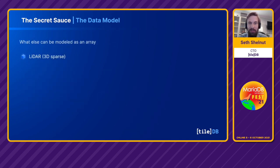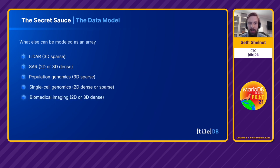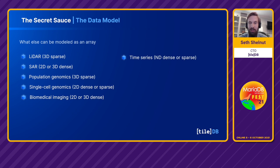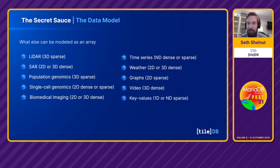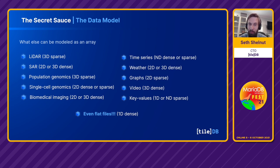What else can be modeled as arrays besides tables? We can have 3D LiDAR point cloud data, imaging data like SAR, genomics data like VCF and BAM files, 3D sparse arrays, single cell genomics, biomedical imaging, time series data, weather data, graphs, videos, key-value stores using strings as dimensions, and even flat files. We actually store any type of file as a one-dimensional dense array — for example, Jupyter notebooks stored as one-dimensional dense arrays in our JupyterLab integration. So we're truly universal.